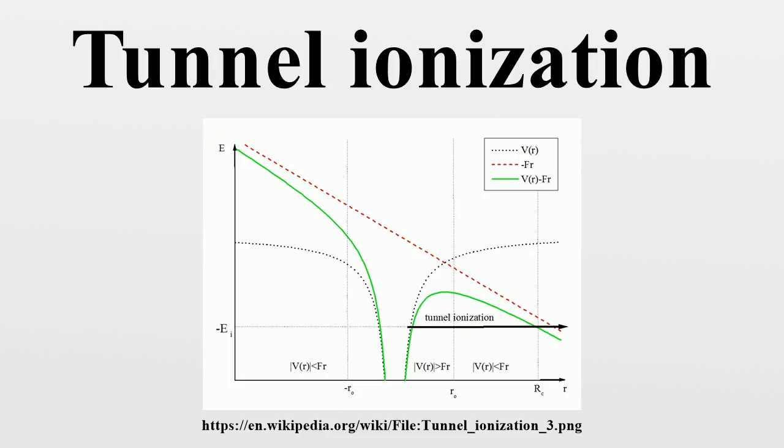Perelomov-Popov-Terent'ev included the Coulomb interaction at larger inter-nuclear distances. Their model was derived for short-range potential and includes the effect of the long-range Coulomb interaction through the first-order correction. In the quasi-classical action, in the quasi-static limit, the PPT model approaches the ADK model.